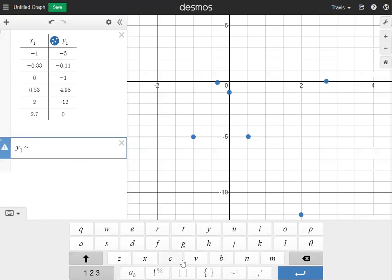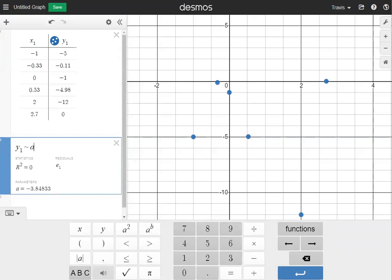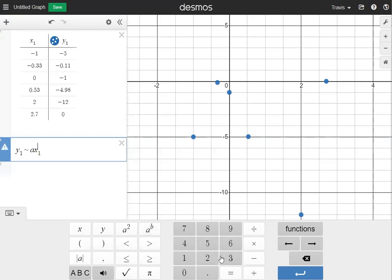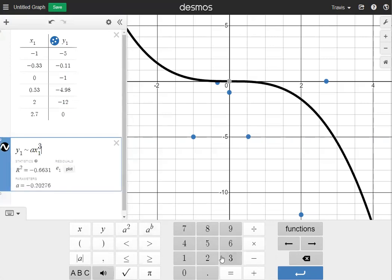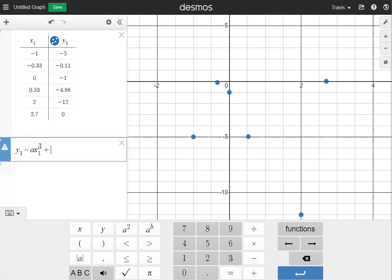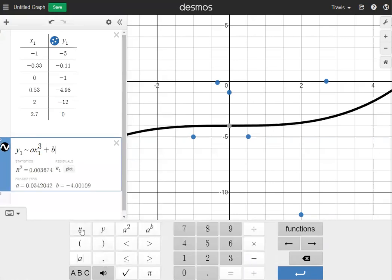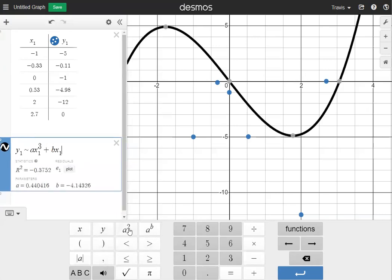Next thing we're going to do is type in our cubic expression. I'm going to need my lowercase a and then I'm going to need an x. So I'm going to go back to my variables. I'm going to choose x and a 1. Make sure that that x has a subscript of 1 or else it won't work. What I'm going to do is raise that to the power of 3. Next thing I'm going to do is add bx squared. So I'm going to click plus, go and grab my lowercase b, and then use x1. And then I'm going to square that.